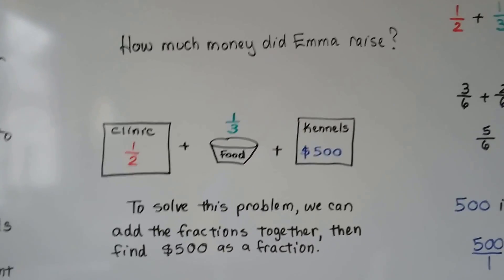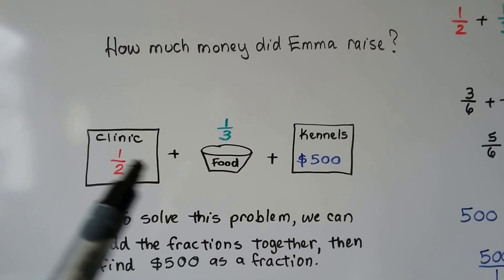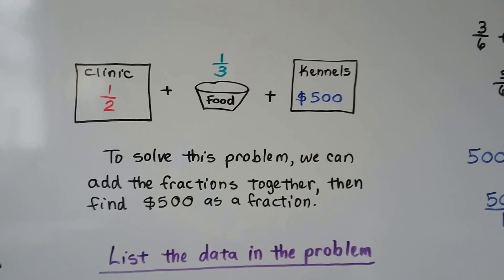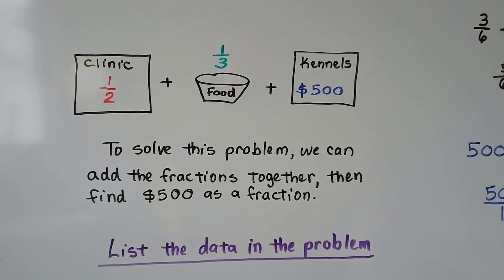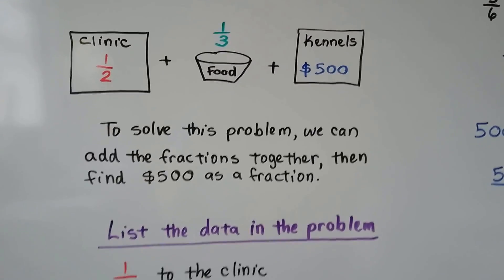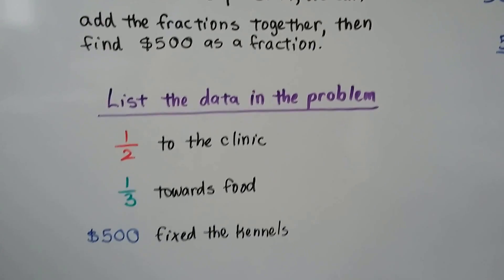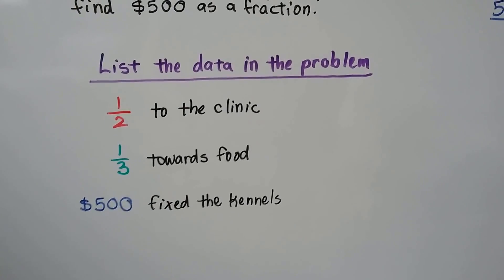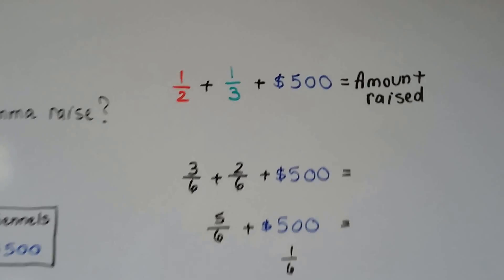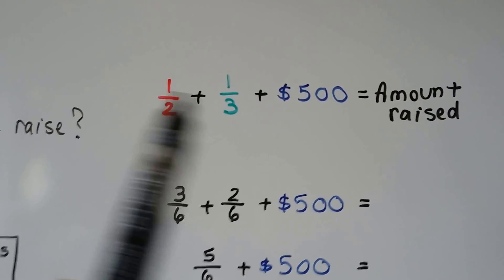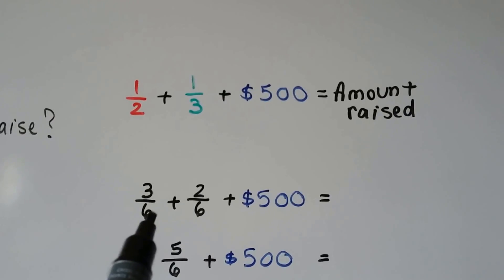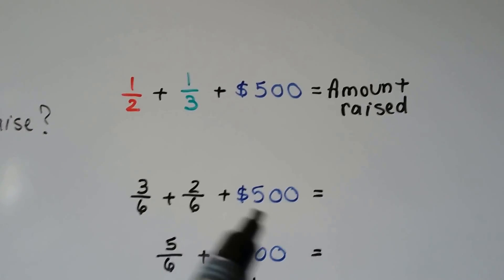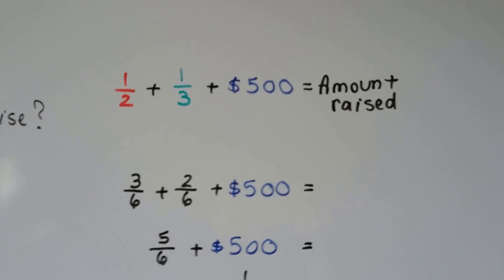How much money did Emma raise? Half of it went to the clinic, one-third of it went to food, and $500 went to the kennels. So to solve this problem, we can add the fractions together and then find $500 as a fraction. We list the data: half to the clinic, one-third towards food, $500 to the kennels. We add one-third plus one-half together. We need to find a common denominator, and that's six. So we have three-sixths plus two-sixths, plus the $500, which will give us the amount she raised.